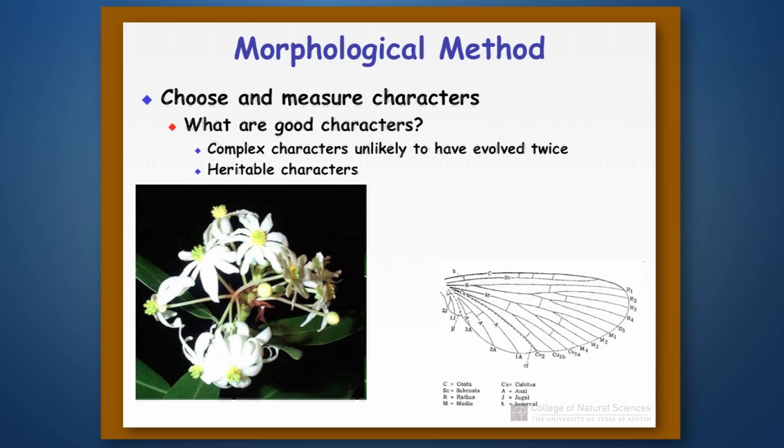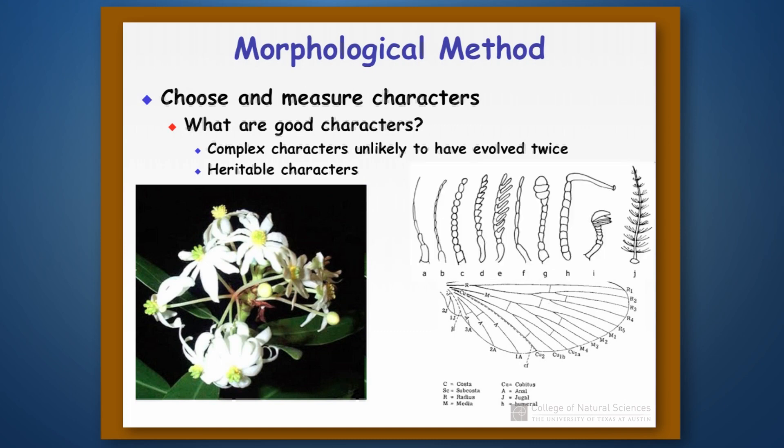For animals, we could pick a bunch of different types of features. On insects that have wings, we might do something with the venation of their wings, or we might look at the structure and shape of their antennae. All of these things would be considered good characters to work with for morphological reconstruction.